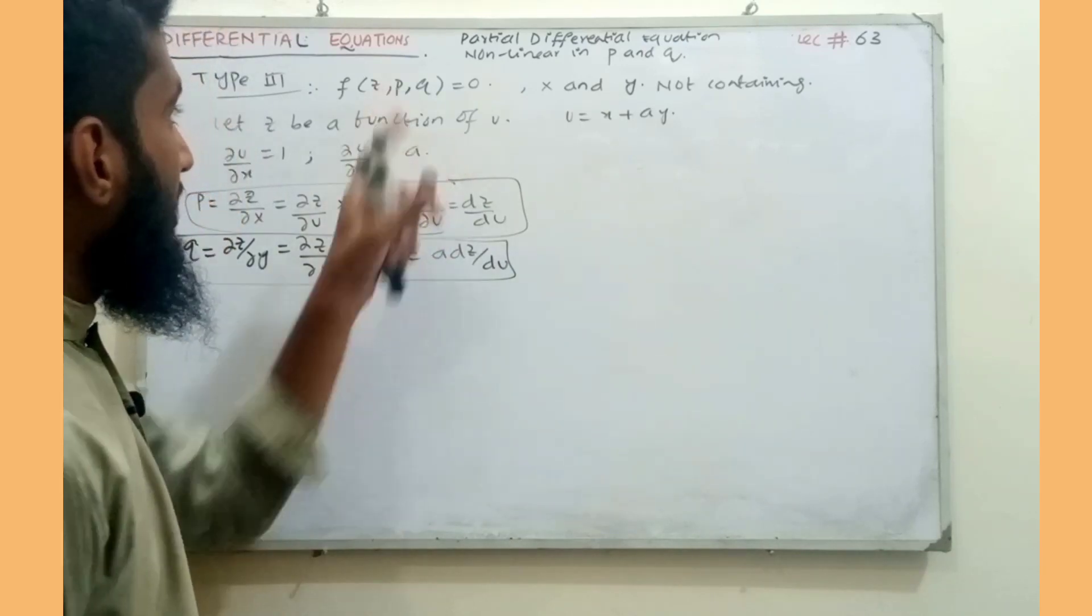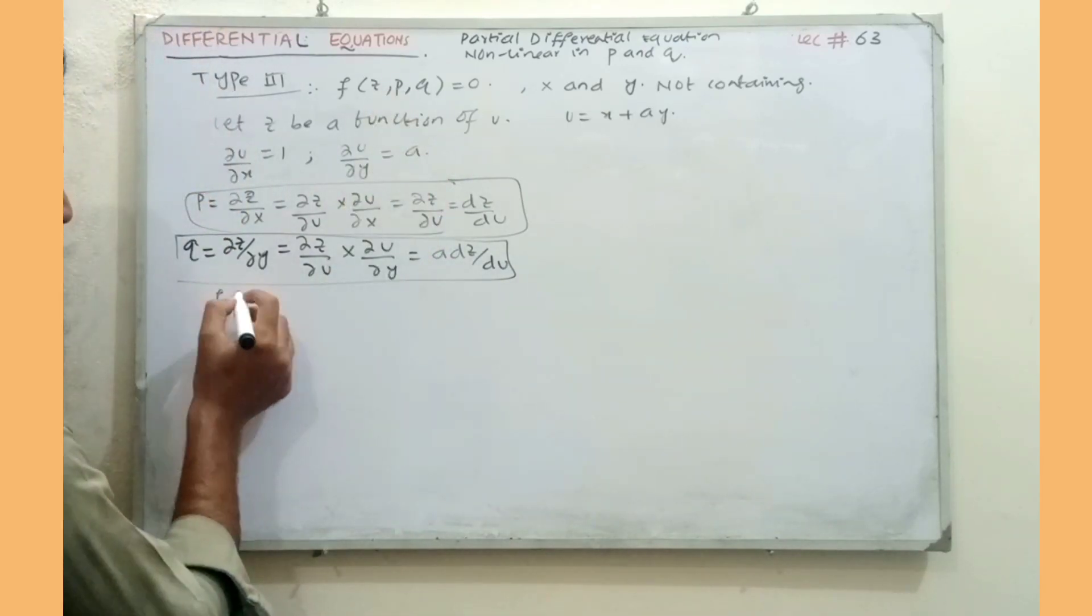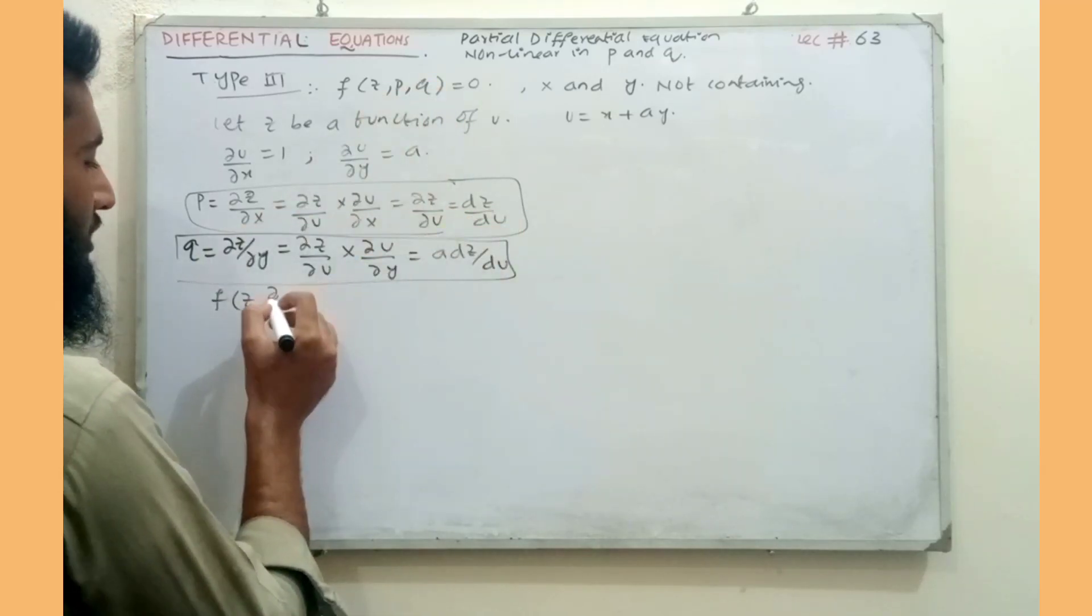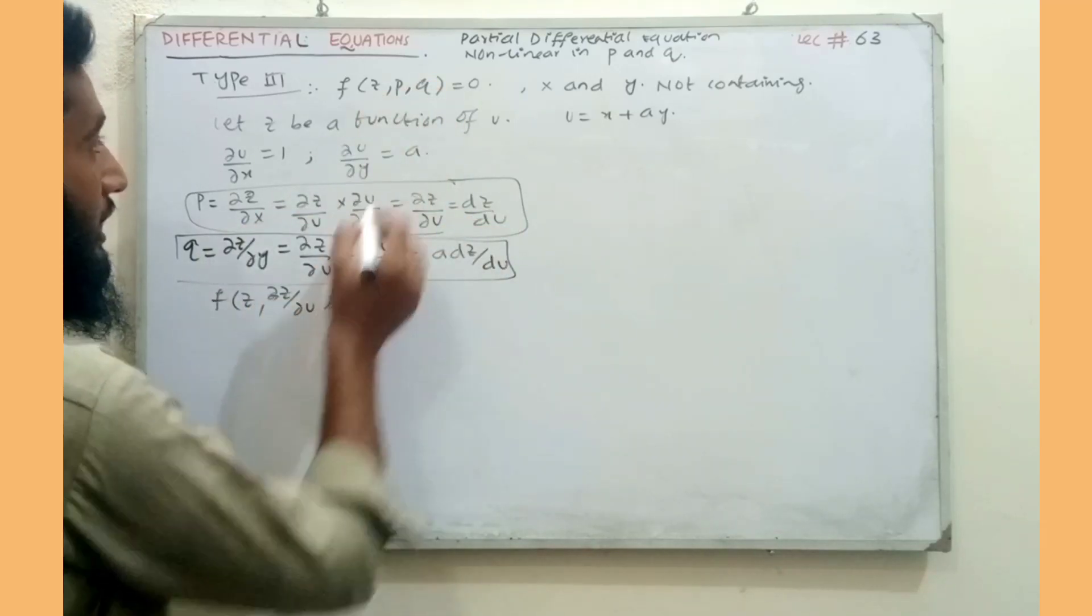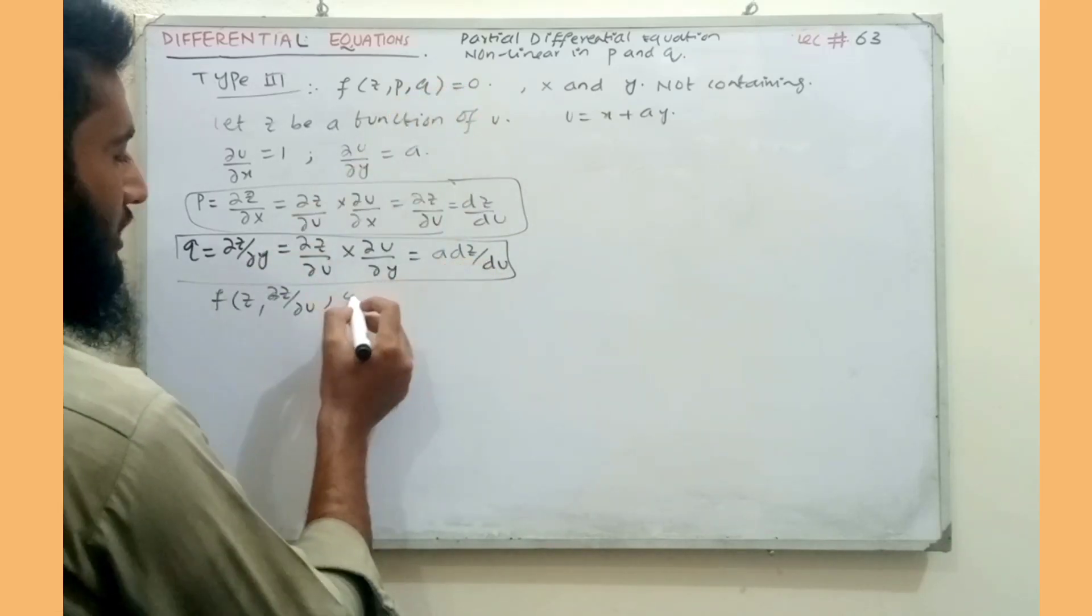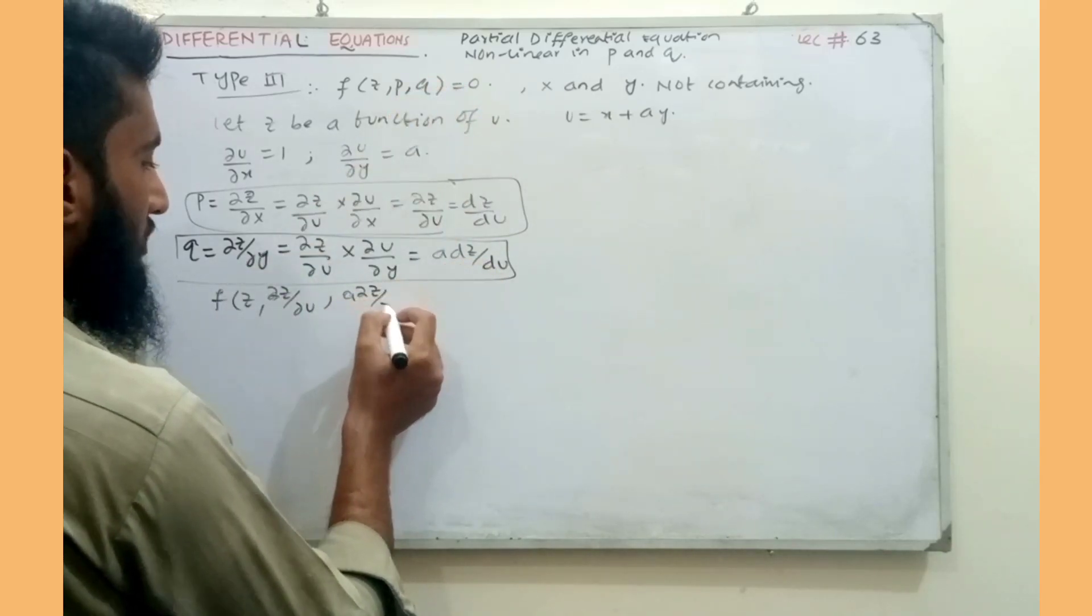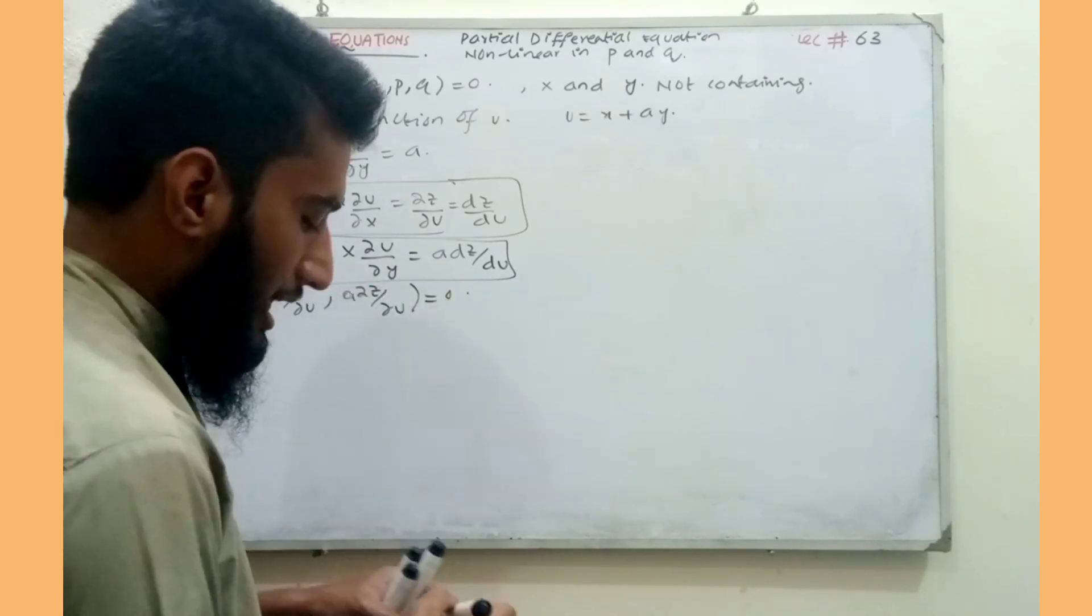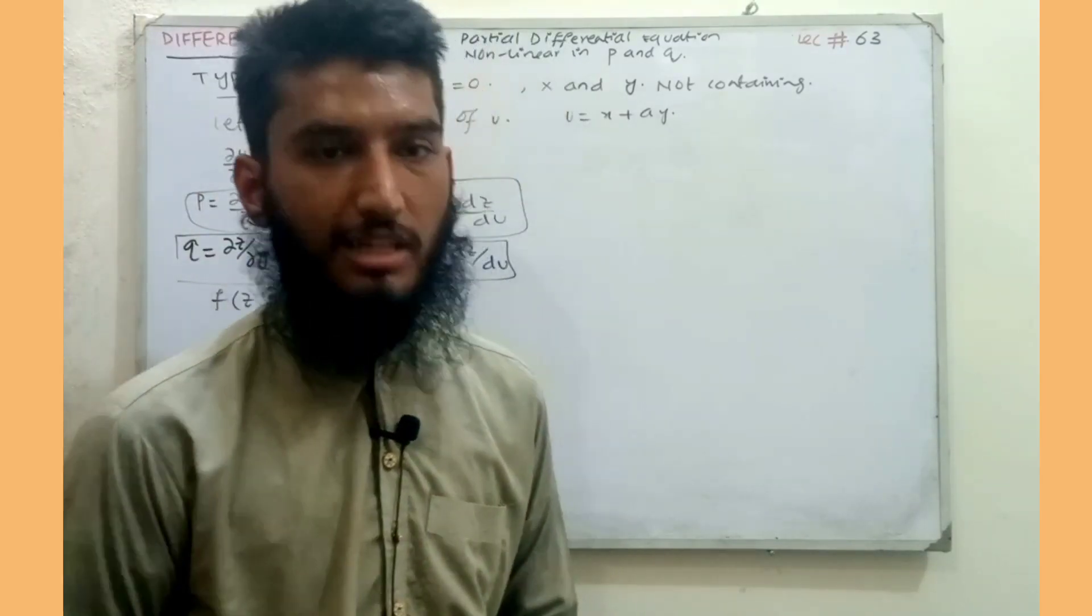Now in the differential equation, z is partial z upon partial u, and Q is a into partial z upon partial u, and this is equal to zero. So here we have our ordinary differential equation. This is the solution concept that we have.